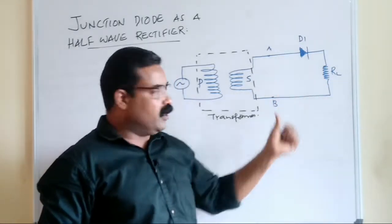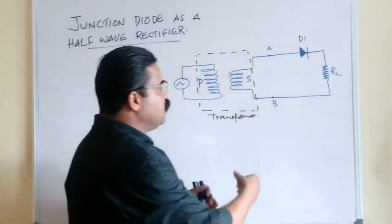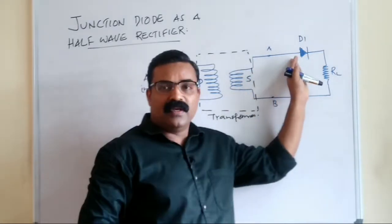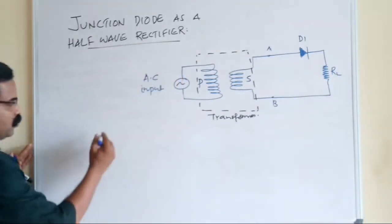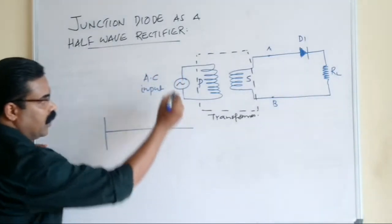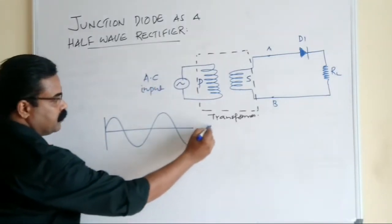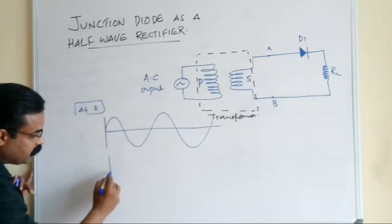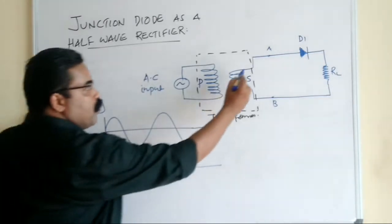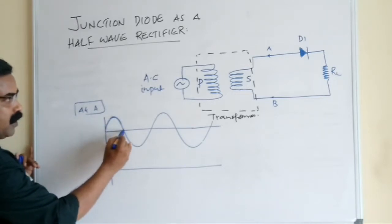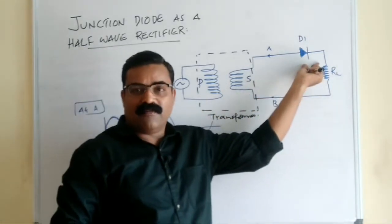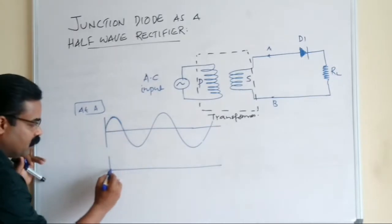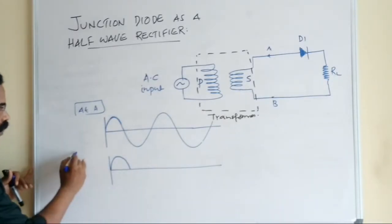In the negative half cycle, A becomes negative, so D1 will not allow the current to pass through because D1 becomes reverse biased. Looking at the cycle at A and the corresponding output at the load resistance: when A becomes positive, diode D1 becomes forward biased, and only then does it allow current to pass through RL. So we get current at the load resistance during the positive half cycle.